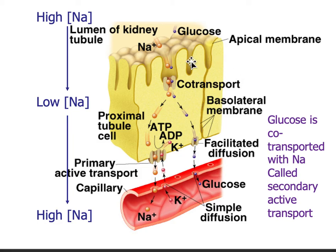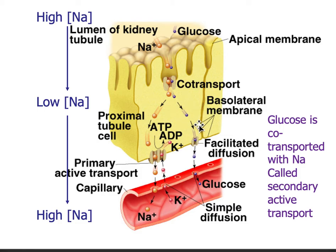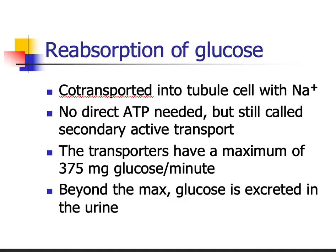Glucose is co-transported with sodium and it's called secondary active transport. Then you have a glucose transporter that will just allow diffusion — it's facilitated because it is a protein channel. It's a glucose transporter, but it's diffusion; it just goes into the blood.